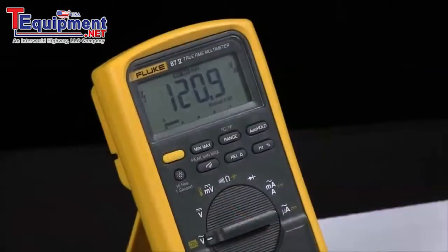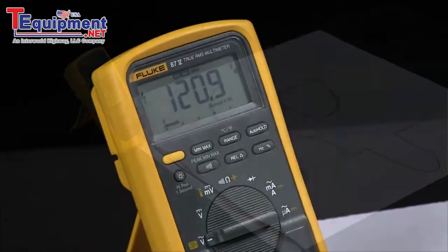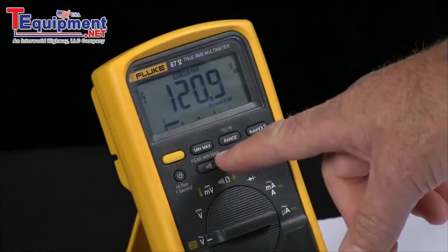How can I check my power quality with the Fluke 87 multimeter? There are some additional features in the Fluke 87 that help us test power quality. One of them is the peak min-max.